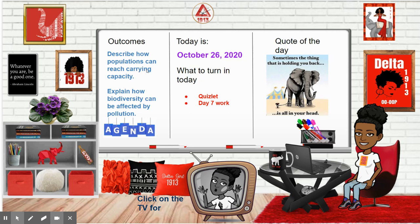Here are our outcomes for today: to describe how populations can reach carrying capacity and explain how biodiversity can be affected by pollution. What are you turning in today? Your Quizlet study set and any work from day seven.